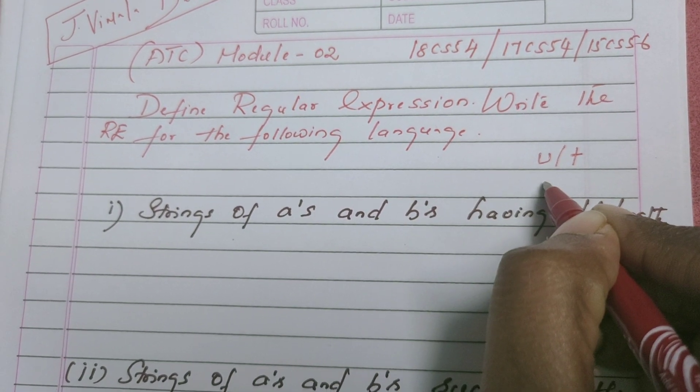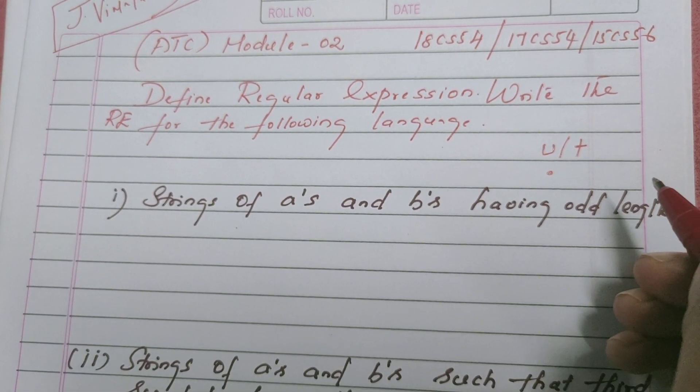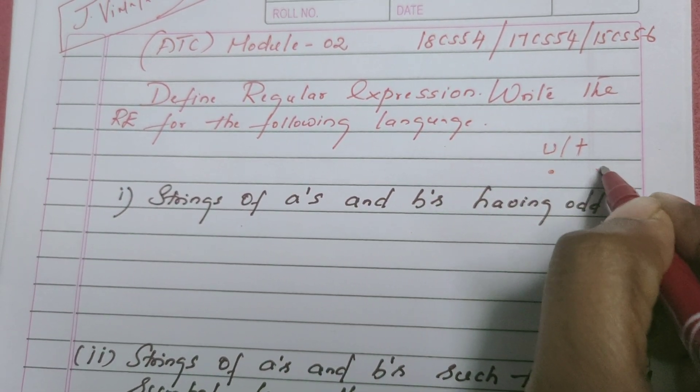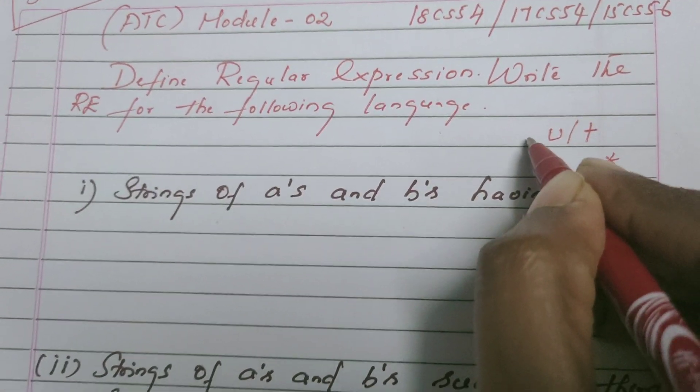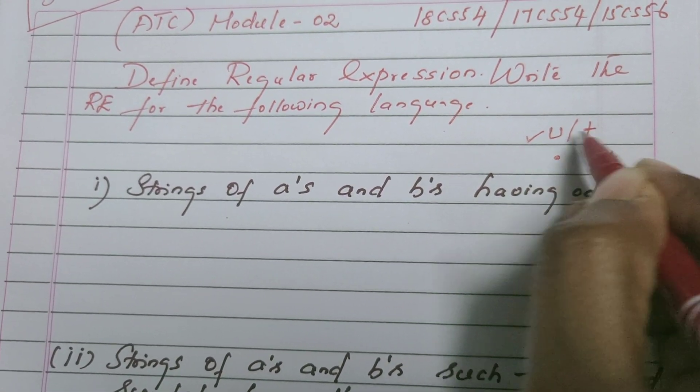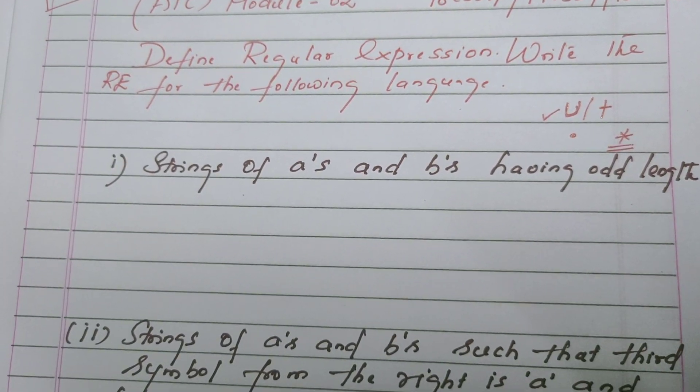and concatenation operator which is given by the dot operator. Union, dot, and then we have the Kleene star operator, it means zero or more. Only three operators we have: union, in place of union you can use plus, dot, and then star. Using these three operators only we write a regular expression.